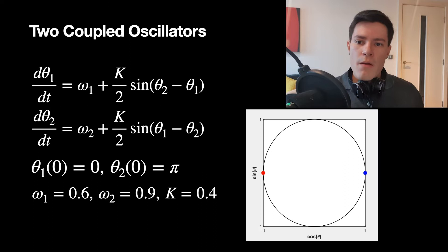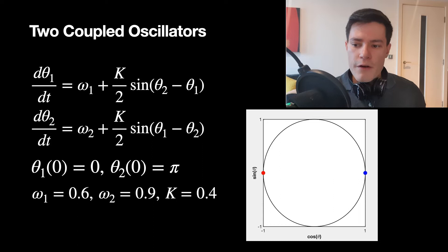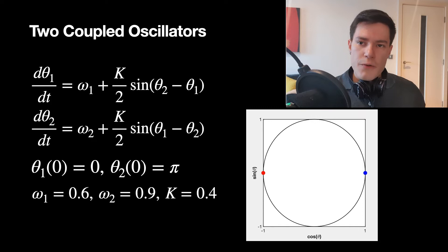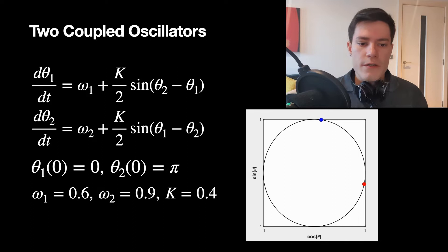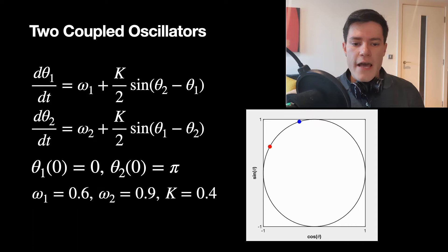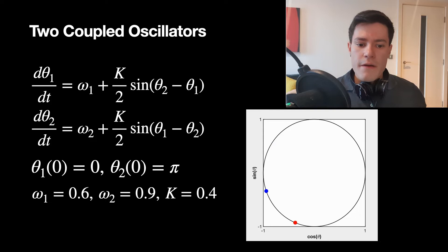It's worth looking at the example of two coupled oscillators for analysis. Here we have equations for the two, with initial conditions: theta one (blue node) starting at zero, theta two starting at pi. Theta two is a bit faster with intrinsic frequency 0.9, and we add some coupling. Along this trajectory, the faster red node catches up to the blue node, passes it, and then they stay at a constant phase difference — this is called frequency locking, where they have the same period but are not exactly synchronized.